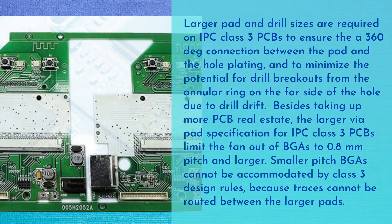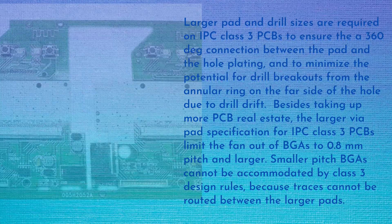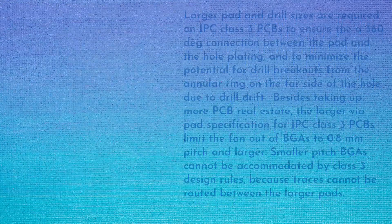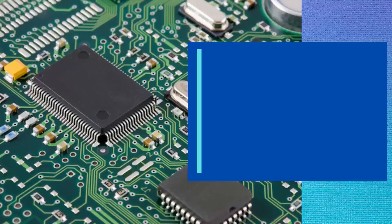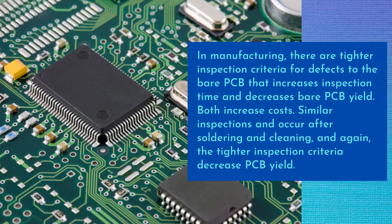In manufacturing, there are tighter inspection criteria for defects to the bare PCB that increase inspection time and decrease bare PCB yield — both of which increase costs. Similar inspections occur after soldering and cleaning, and again, the tighter inspection criteria decrease PCB yield.